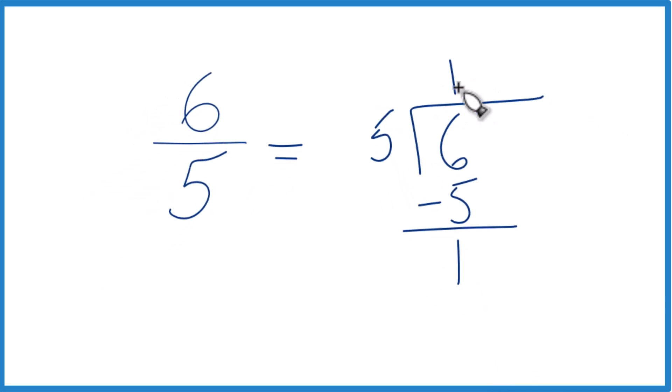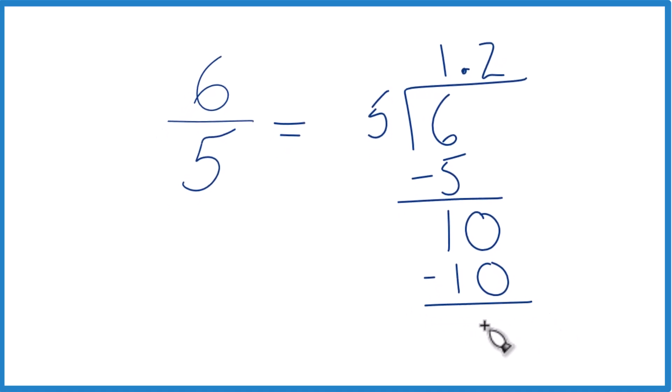5 doesn't go into 1, but if we put a decimal point up here we can call this 10. Now 2 times 5, that gives you 10. We subtract, no remainder.